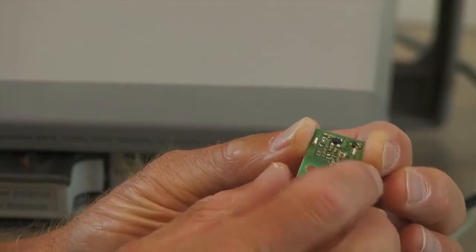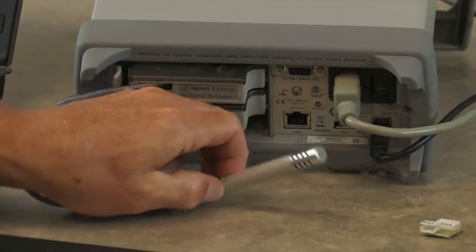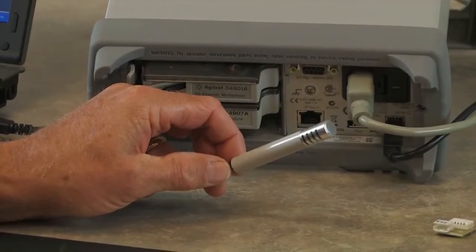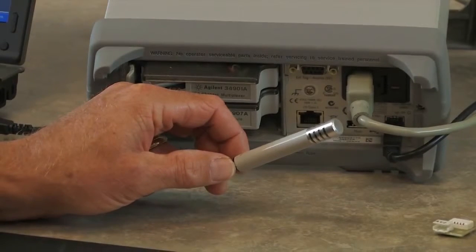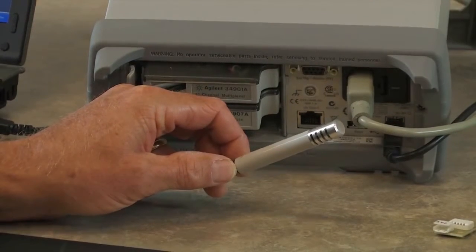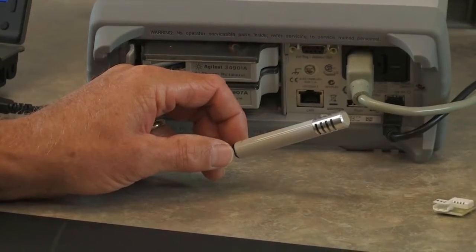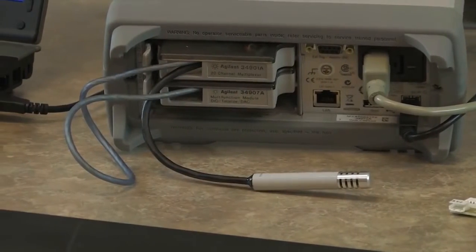The final example I have is attached to the back of the 34970. It comes in a nice case and it also contains a thermistor, so it can measure temperature along with humidity. This is a very accurate sensor. It's 2% accuracy over a broad range of temperatures and humidity. So let's go ahead and make some measurements.